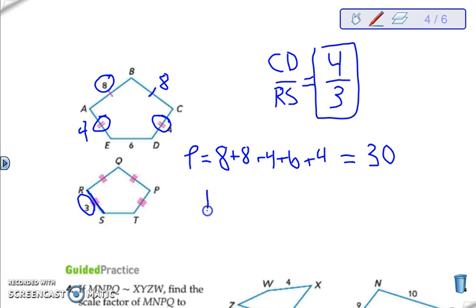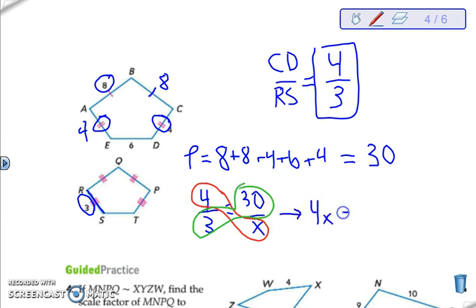So like we said, the scale factor is the proportional, or the ratio between the two figures. So 4 over 3 is equal to 30 over x. Again, because the 30 was the perimeter for the larger figure, since the 4 is bigger than the 3, the 30 has to go on top. We are just going to cross multiply to set up our equation. So 4 times x is going to give me 4x. 3 times 30, it's going to give me 90. So if I divide everything by 4, x gives me 22.5. And that is it for that.